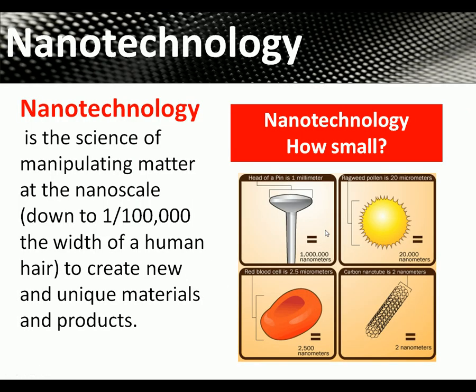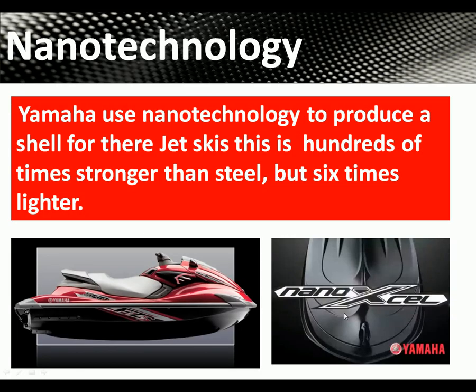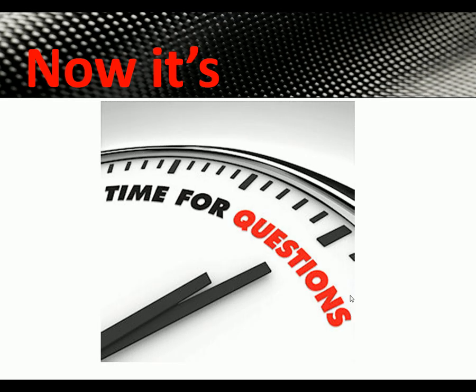Nanotechnology is the science of manipulating matter at the nano scale — down to a hundred thousandth of the width of a human hair — to create new materials. A head of a pin is one millimeter, while carbon nanotubes are just two nanometers. Yamaha uses nanotechnology to produce a shell for their jet skis that is hundreds of times stronger than steel but six times lighter, making it very rigid and very lightweight.